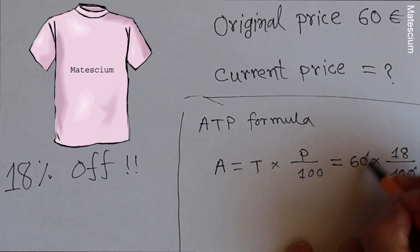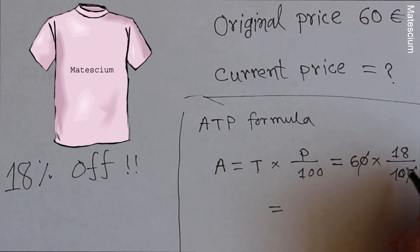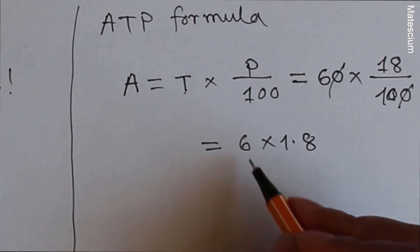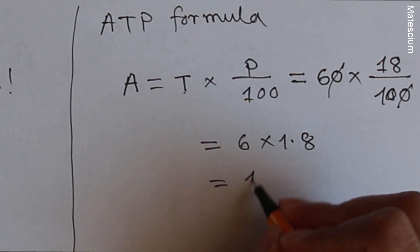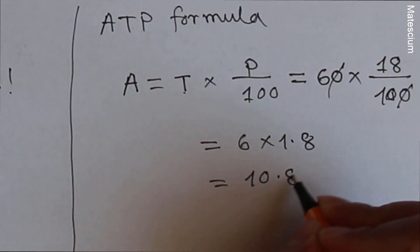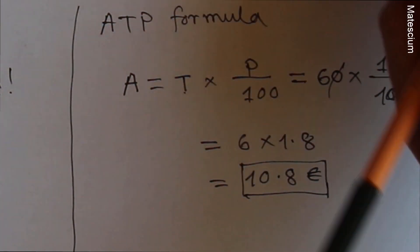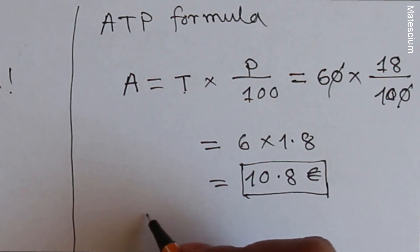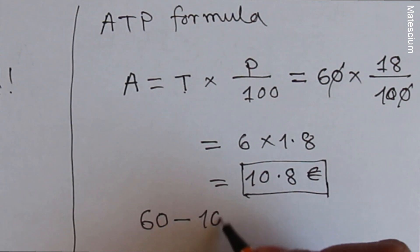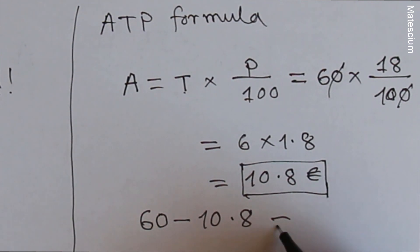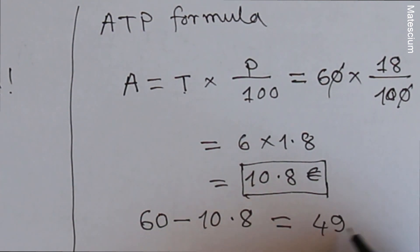This zero and that zero is canceled and 18 times 10, which is 1.8. So 6 times 1.8, which equals to 10.8. This 10.8 euros is reduced from the original price. That means original price is 60 euros minus reduction is 10.8 euros. So final price is 49.2 euros. Yes, this is the final price.